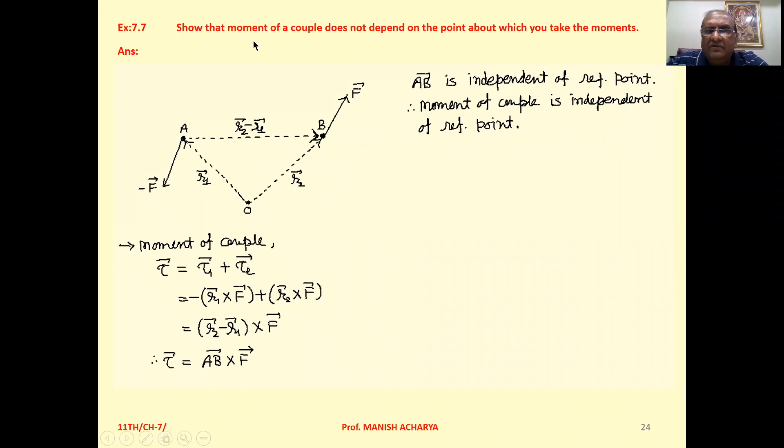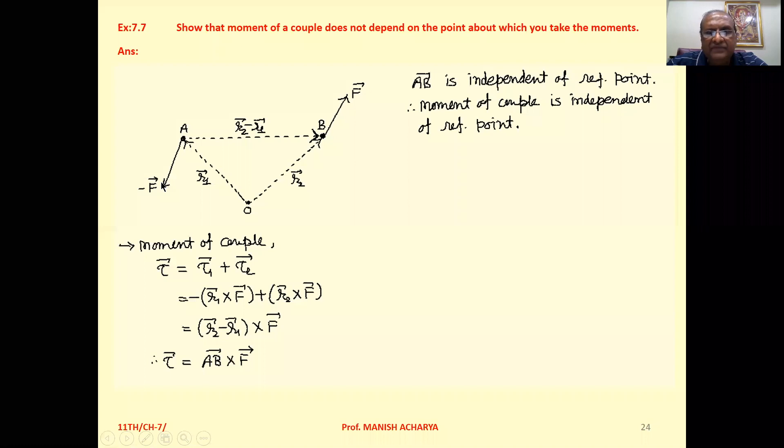Now we have to show that moment of couple. Couple means two forces we have to take equal in magnitude opposite in direction. So here we consider force F at B in the direction as shown in the figure. So opposite to it, there will be the force minus F at A.